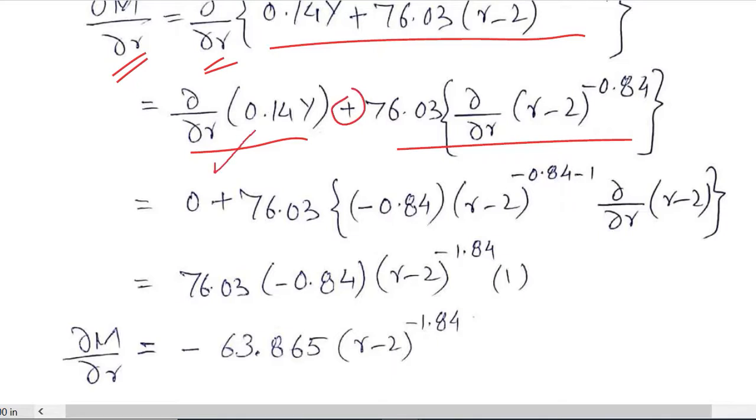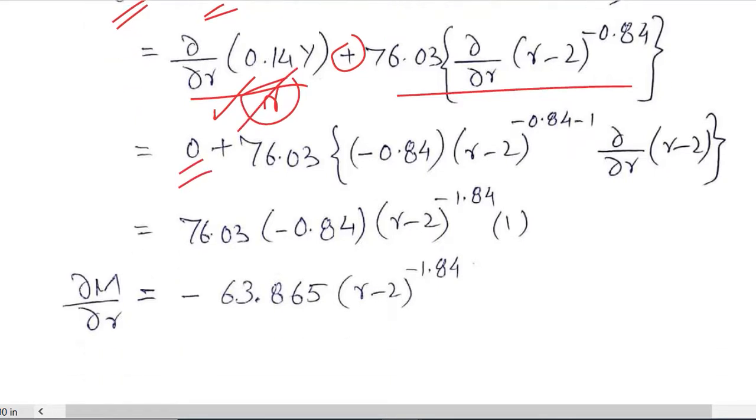Both are separately differentiated using the sum rule. Here we can't find any r so this term will be reduced to 0, and here the term will be differentiated as per the rules of differentiation. Here we can see the power is there so power rule will be applied.